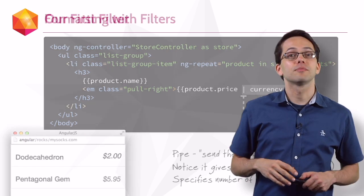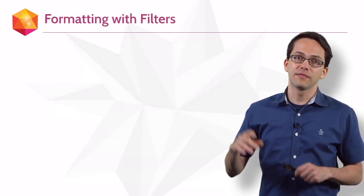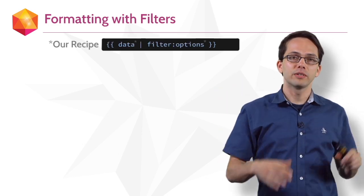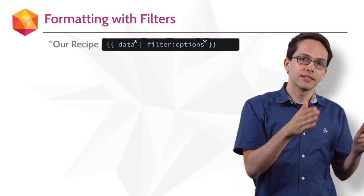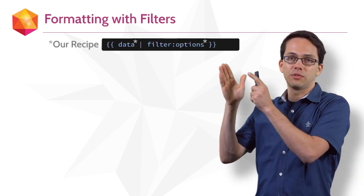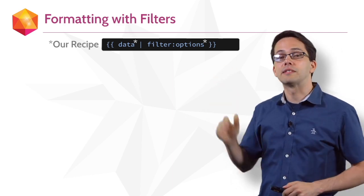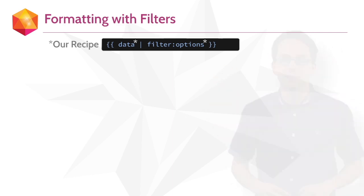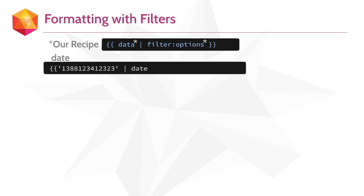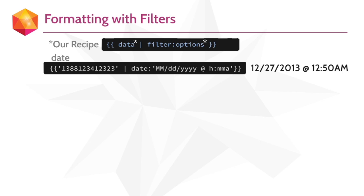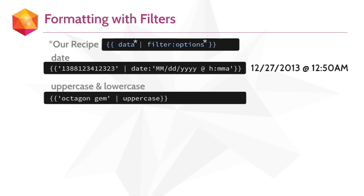Angular has a bunch of filters, and they follow this format where you take some data and you pipe that into a filter, sometimes even specifying options. For example, if we had a timestamp, we could pipe that into the date filter, specifying the format of the date we wanted. We can also specify a filter of uppercase or lowercase on a string.